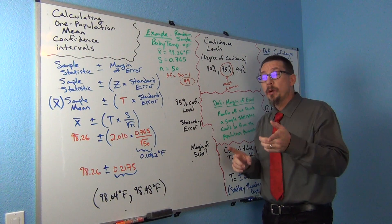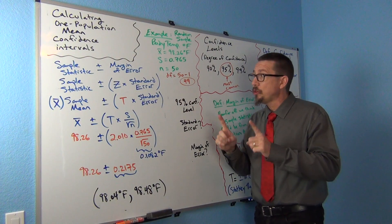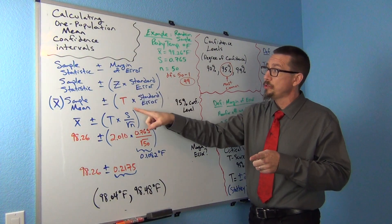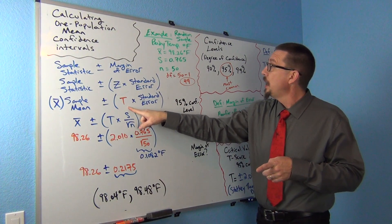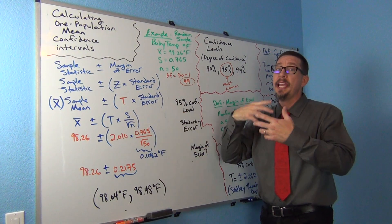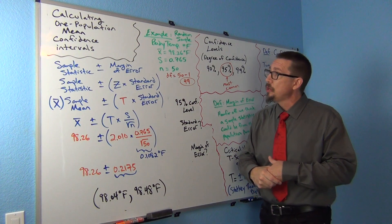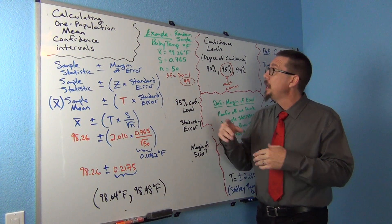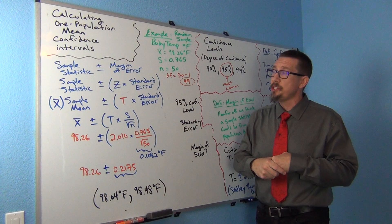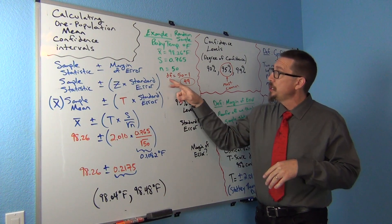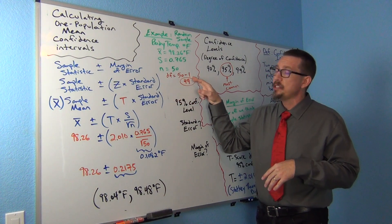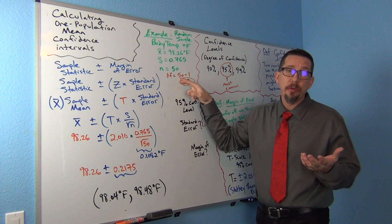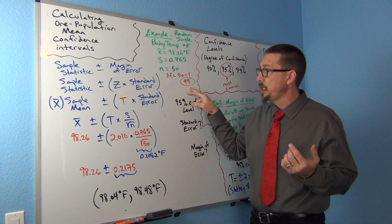If you watched the video on how to calculate critical values, critical z-scores or critical t-scores, t-scores need a degrees of freedom to calculate them. For one sample or one population confidence intervals, we would want to do a degrees of freedom of n minus 1. So since there were 50 people in the data set, there's going to be a degrees of freedom of 49.